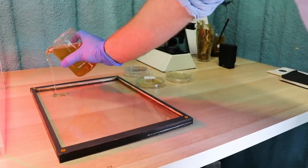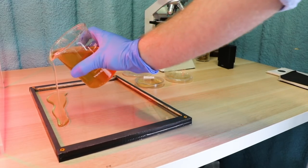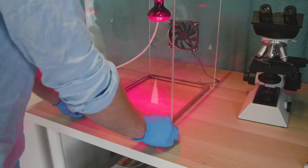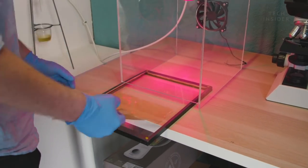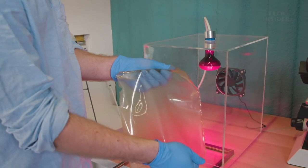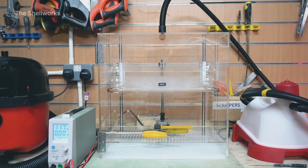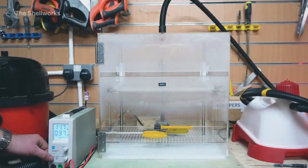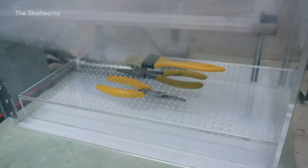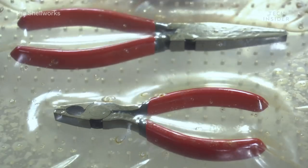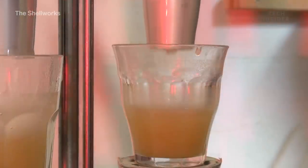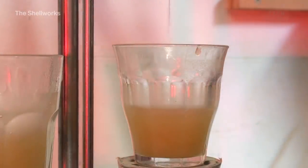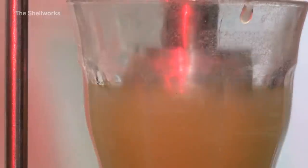Each machine is good for making a different thing. The sheet former obviously only makes sheets. The vacuum former is good for making less three-dimensional reliefs, like blister packaging. And the dip molder is excellent for making extruded shapes, so very three-dimensional objects.